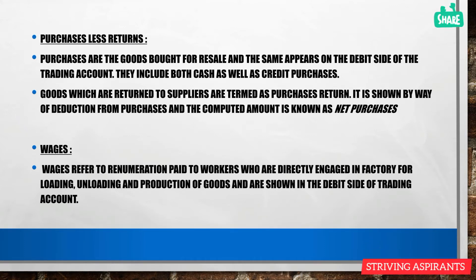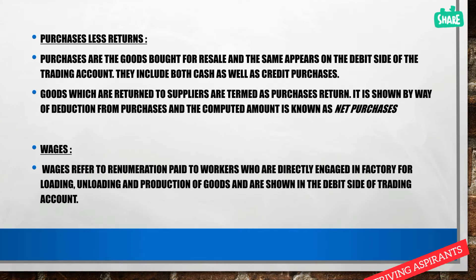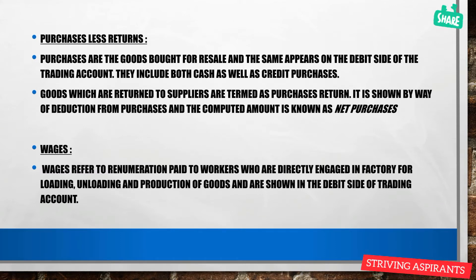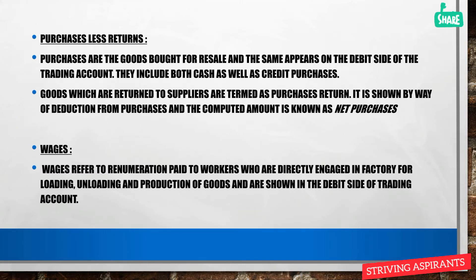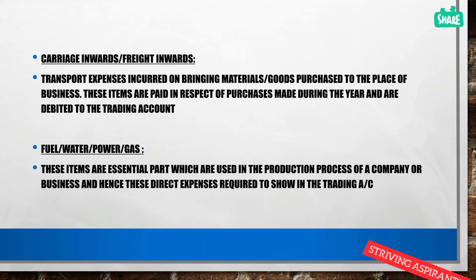Next is wages — the remuneration paid to workers directly engaged in factory, loading, unloading, and production of goods. Amounts paid to workers in the production section are called wages and are shown on the debit side of the trading account. Next is carriage inwards or freight inwards — these are transport expenses incurred to bring materials or goods purchased by the business.